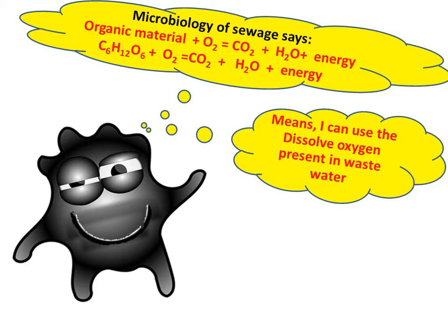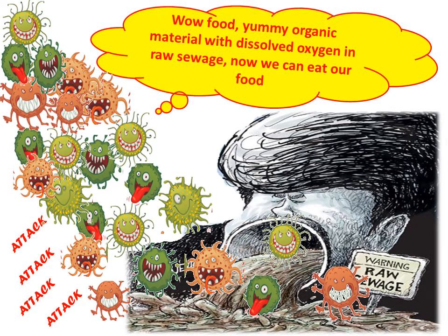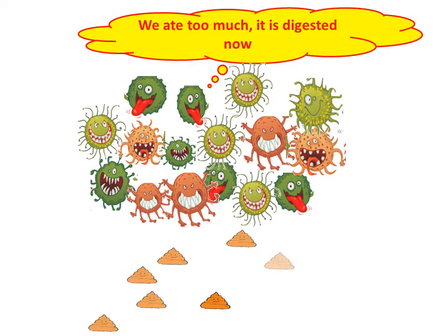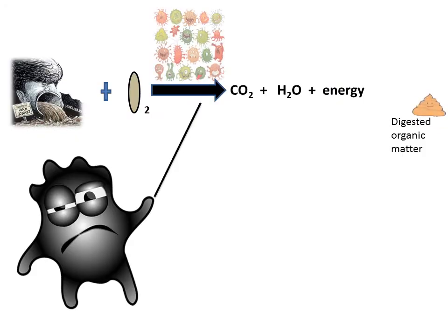The microbiology of sewage says: organic material, with the help of dissolved oxygen, can be converted into carbon dioxide, water, and energy by microorganisms through biodegradation. So we can use the dissolved oxygen present in wastewater. Microorganisms degrade the organic waste with dissolved oxygen and convert it into carbon dioxide, water, energy, and digested organic material.